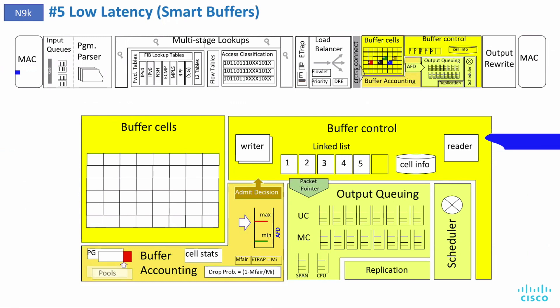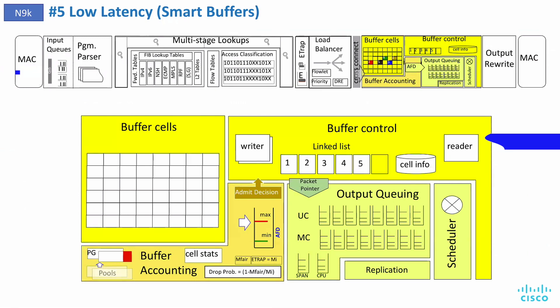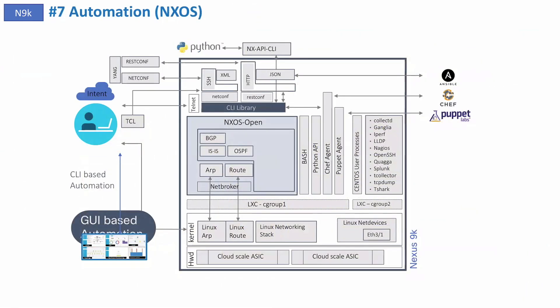This is smart buffering working with advanced queue management and automatic prioritization — we can really benefit NVMe small flows and mice flows from this. For automation with ACI or NX-OS, you can program BGP, ISIS, OSPF and more in multiple ways: CLI, API, JSON, LXC containers built into NX-OS, Linux tools, and external tools like Ansible, Chef, and Puppet.